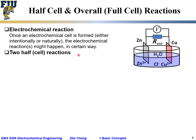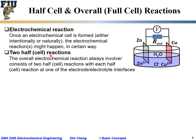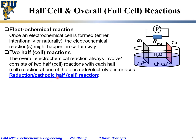Any overall reaction contains typically two so-called half-cell reactions. The overall reaction always involves two parts. One part occurs at one of the electrodes — at the interface between the electrode and the electrolyte, to be precise. One of the half-cell reactions would be called the reduction or cathodic half-cell reaction. Cathodic reaction means reduction is happening.